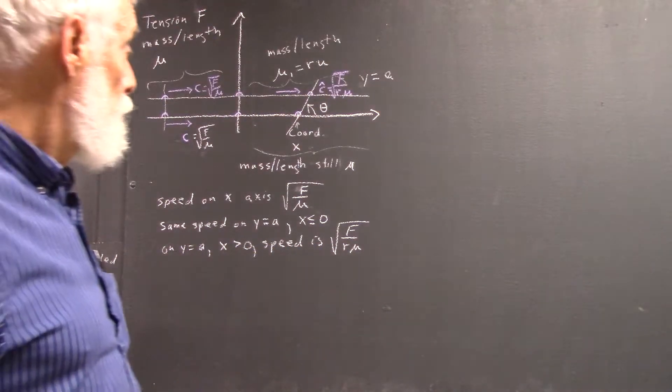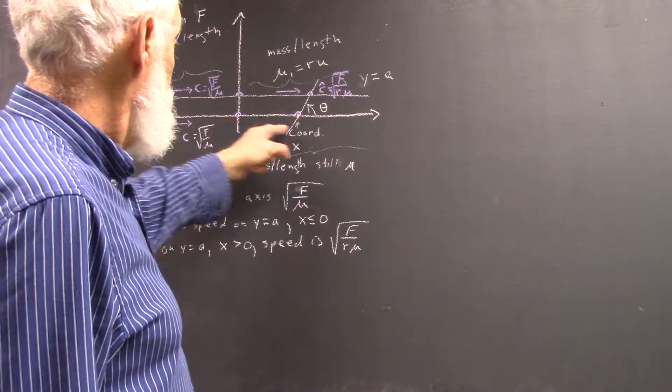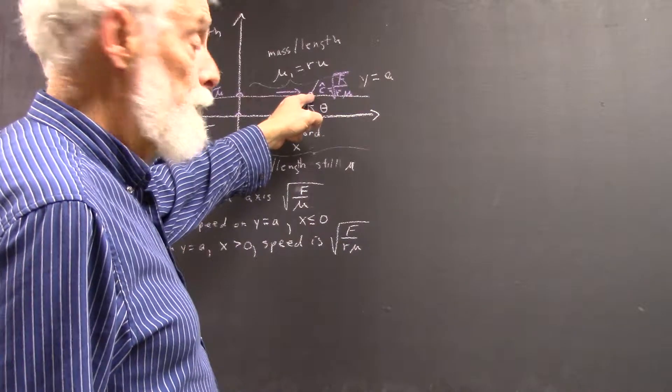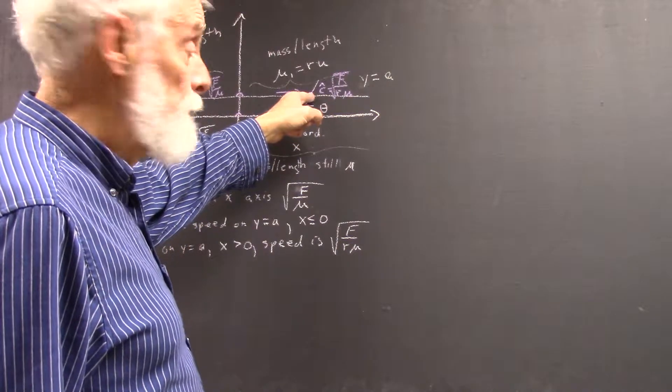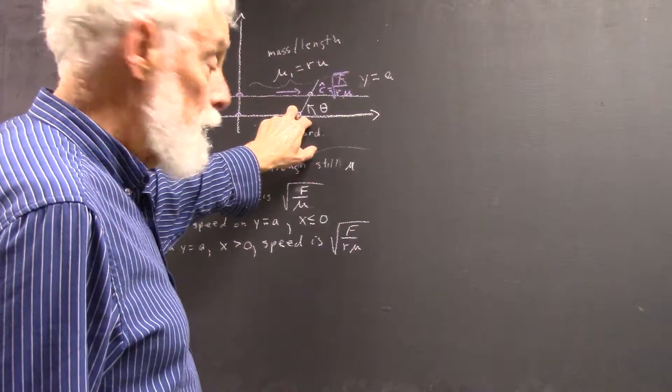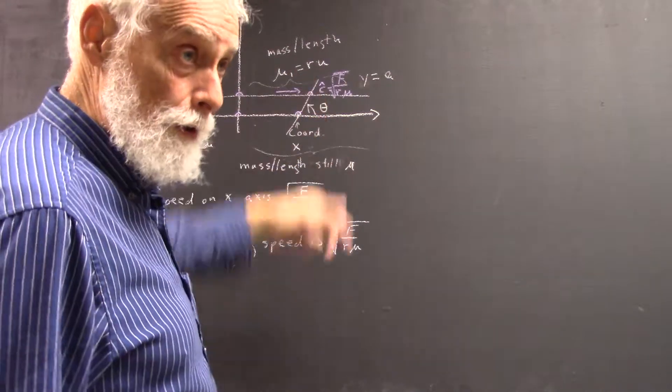So again, the question then is, if this is your x-coordinate here, then what's your x-coordinate at this point? Once you have that, knowing this distance, you can find the difference of the x-coordinates and find the angle rather easily.